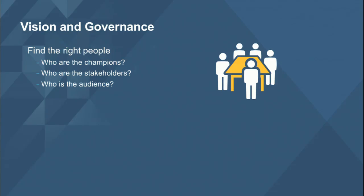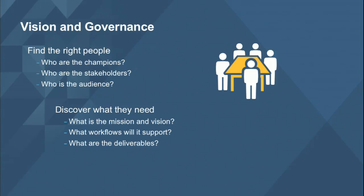What are the information products they'll need to help make their workflows more successful? Once you identify those things and keep that list handy, it makes it easier to discover what they need. What is the mission and vision of the organization and the portal? What workflows will it support inside and outside the organization? What are the deliverables? Do they need to be web-based mapping applications, or just location-based services? These are all important questions to answer when thinking about how the portal is going to be implemented and managed moving forward.